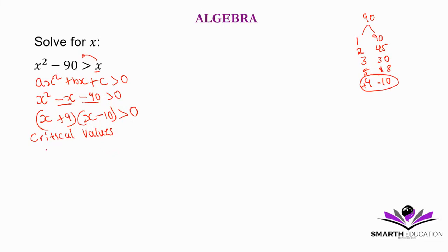So we have x plus 9 is equal to 0, or x minus 10 is equal to 0. These are the critical values. x is equal to negative 9, or x is equal to 10.